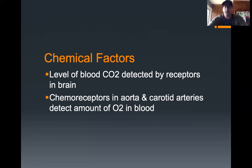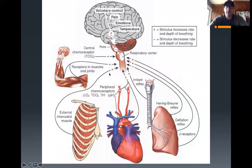Lower levels of oxygen cause a signal from the medulla oblongata to increase breathing rate, while higher levels of oxygen cause a decrease. For example, an increase in CO2 detected by a chemoreceptor in the brain sends a signal to the respiratory center, causing both heart rate and breathing rate to go up.